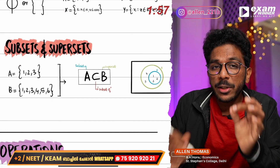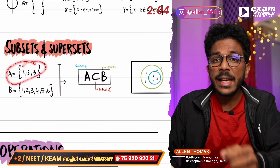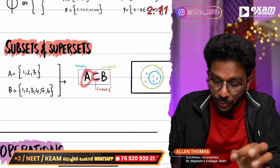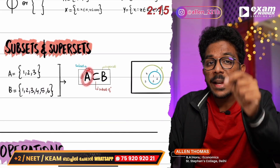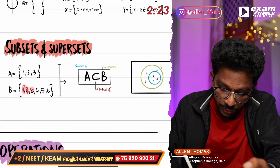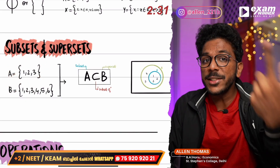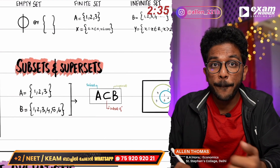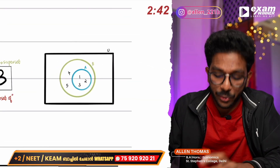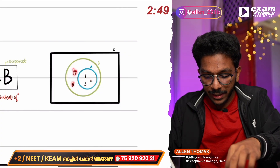Subset and superset — subset and superset are related. A is a subset of B; every element of A is in B. A is also a subset of itself. B is a superset of A. Now, in a Venn diagram: A is {1, 2, 3} and B is {1, 2, 3}. The Venn diagram is represented with a universal set shown as a rectangle.